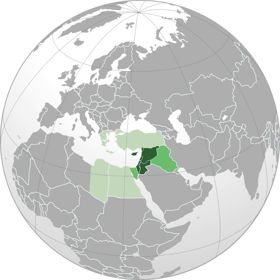In the 13th and 14th centuries, the term Levante was used for Italian maritime commerce in the eastern Mediterranean, including Greece, Anatolia, Syria-Palestine, and Egypt — that is, the lands east of Venice. Eventually the term was restricted to the Muslim countries of Syria-Palestine and Egypt.